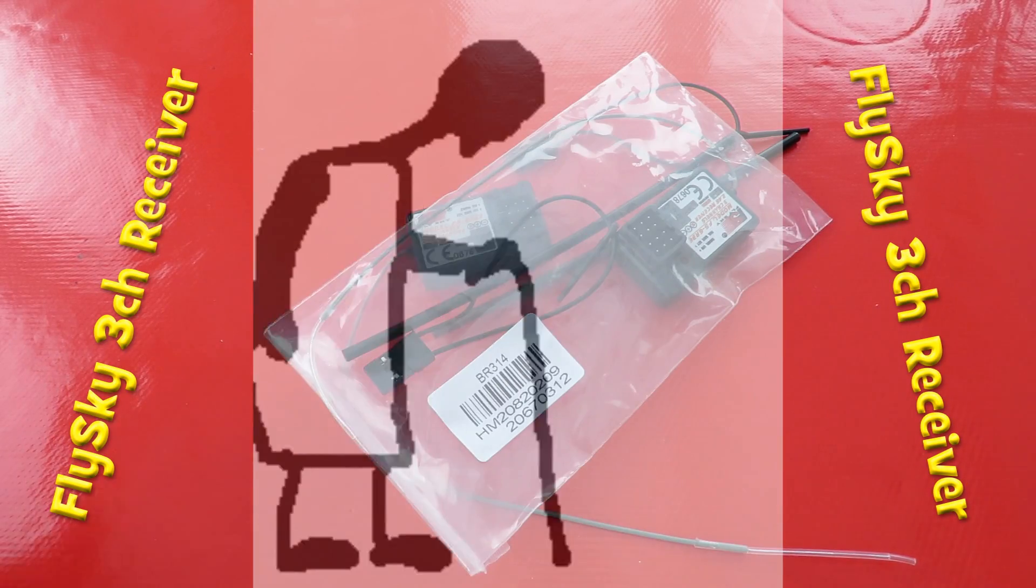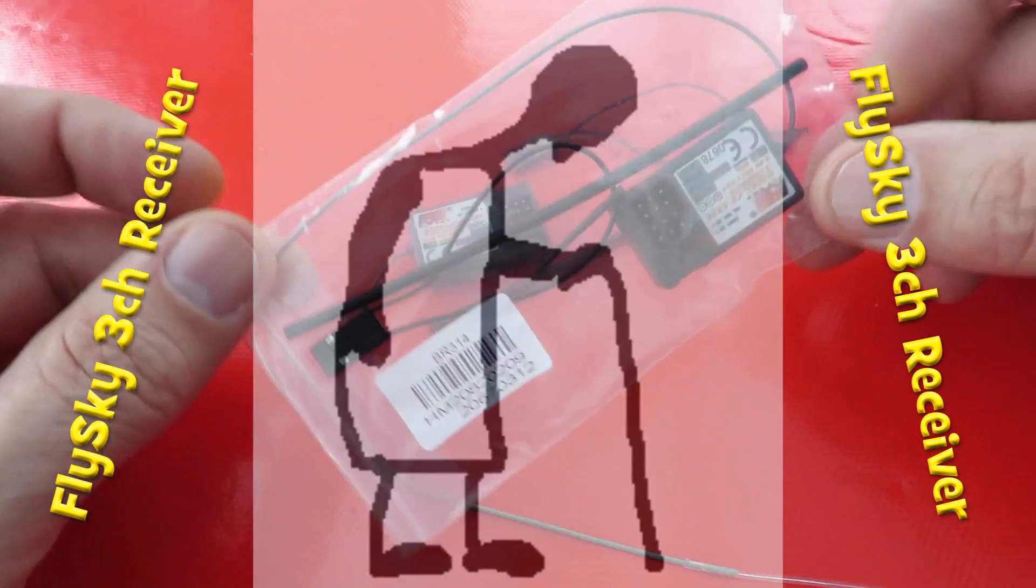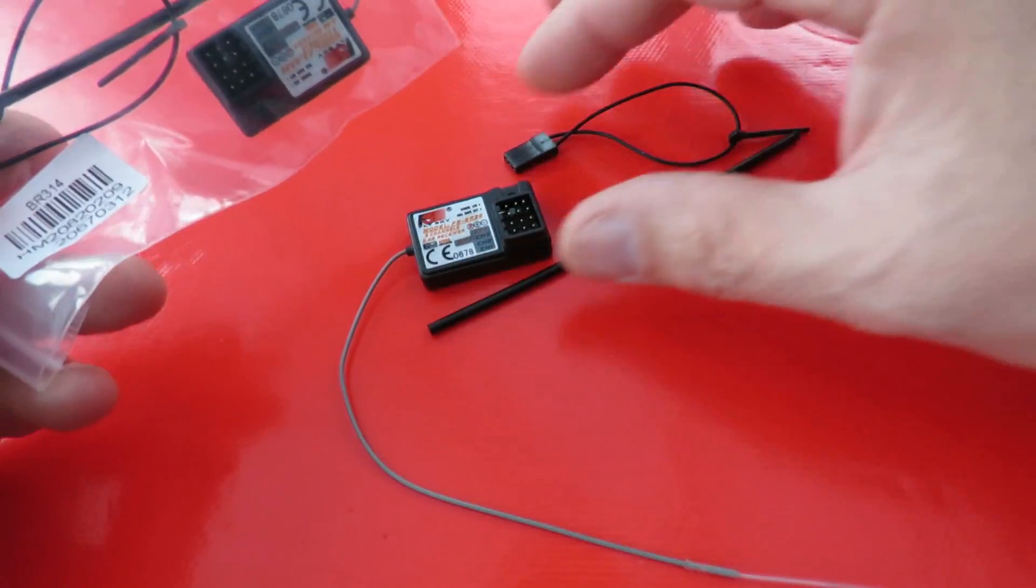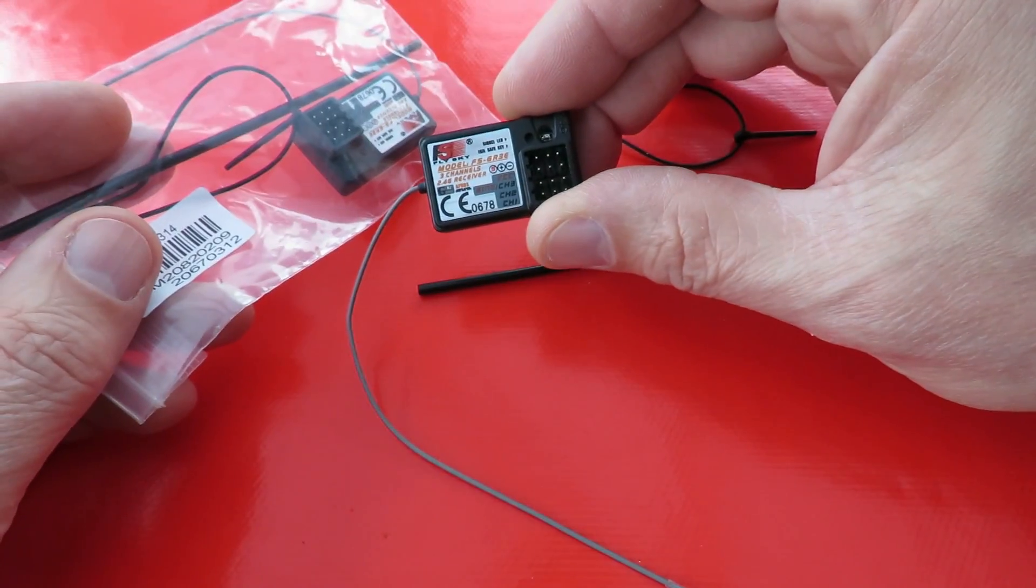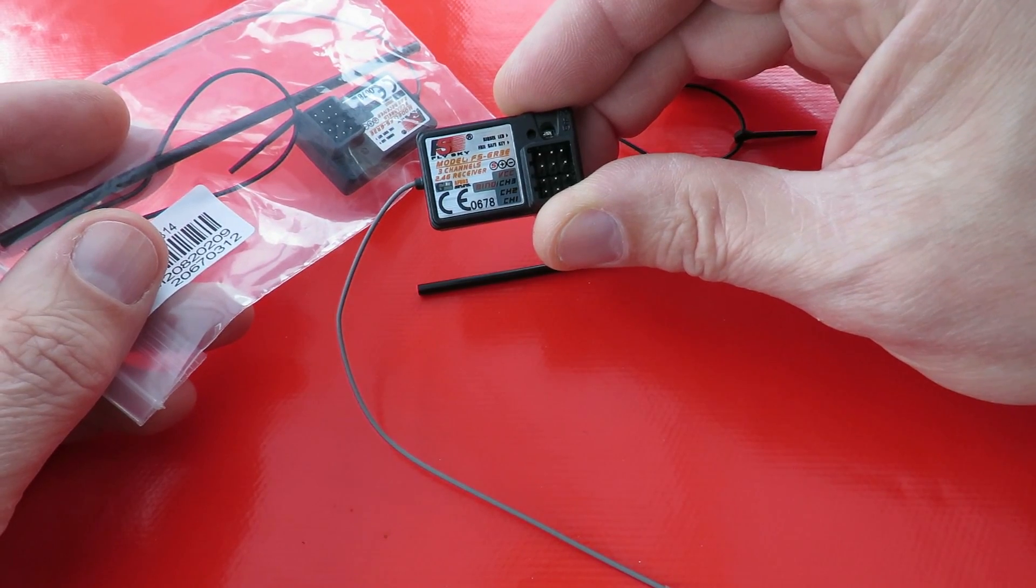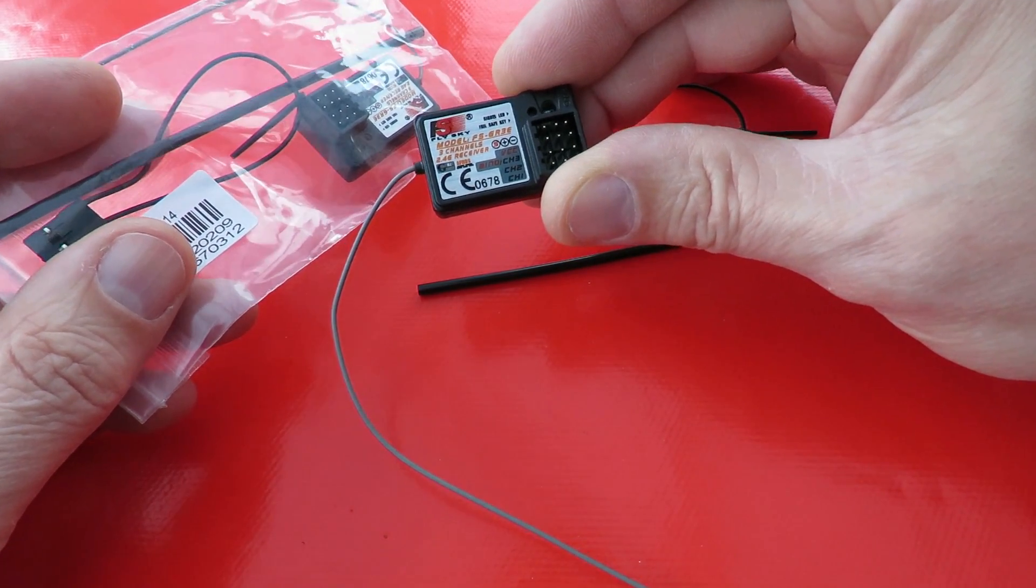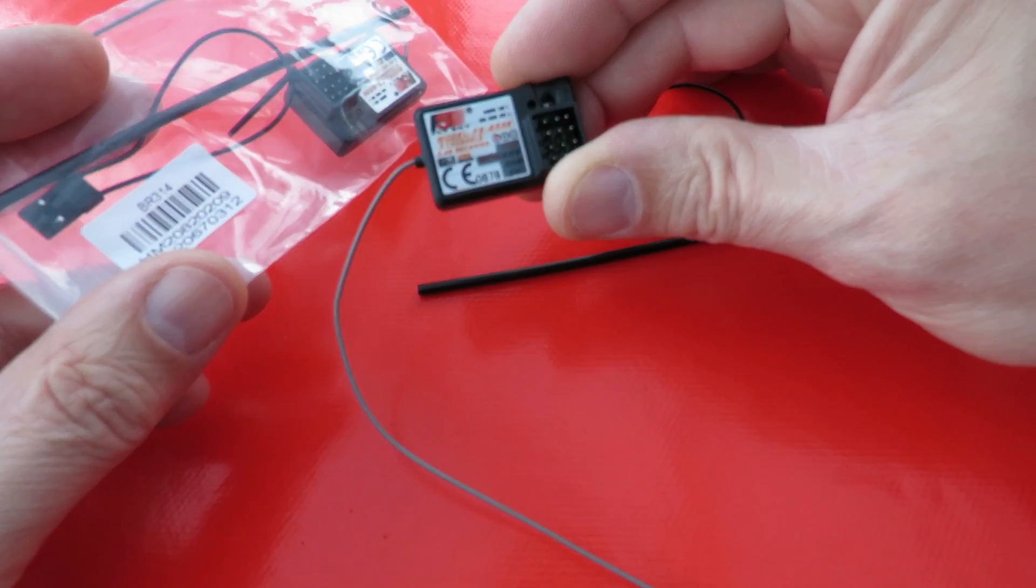Hi guys. These receivers arrived in the post today. These are Flysky FS-GR3E 3-channel 2.4 gig receivers.